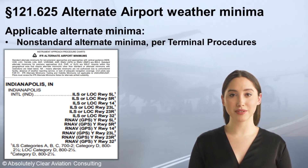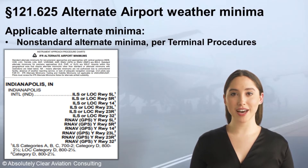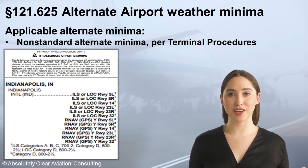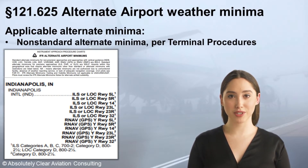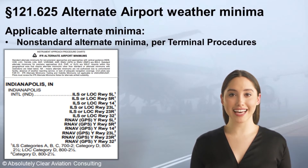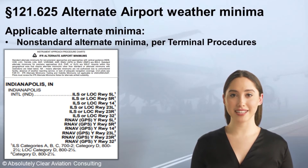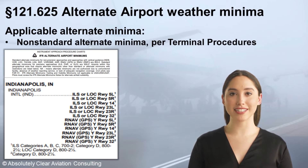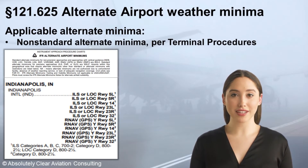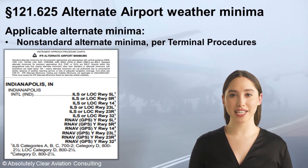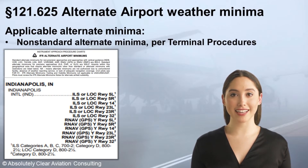Non-standard alternate minimums are indicated by the superscript numbers following the approach designations. All of the listed approaches followed by the superscript number 1 require non-standard weather minimums for aircraft in approach speed categories A, B, and C. Instead of the standard Part 91 minimum weather conditions of 600 and 2, they are 700 and 2. Alternate weather minimums for a Category D aircraft are 800 and 2.5 for both listed ILS precision approaches and localizer non-precision approaches.